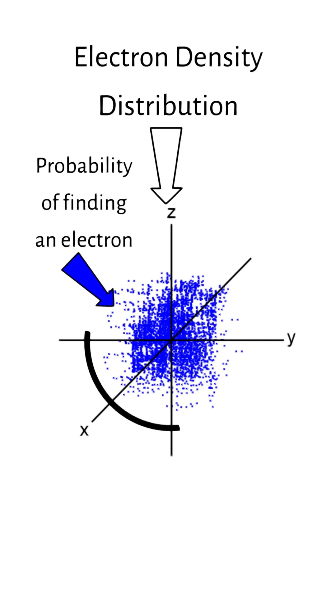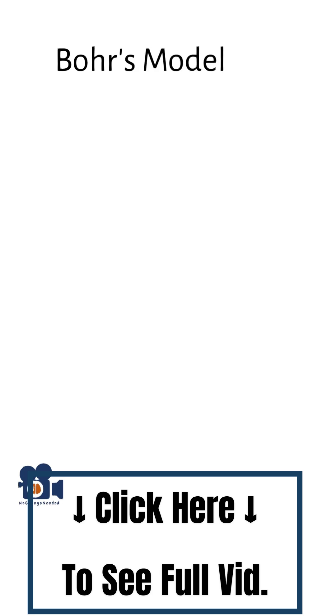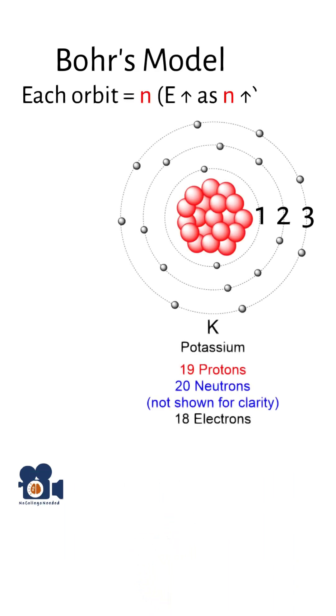When you look at the density distribution, a three-dimensional shape is clear, and that shape is the atomic orbital, which also has energy associated with it. This is similar to Bohr's model, in which he states that there is an energy associated with each orbit or level.